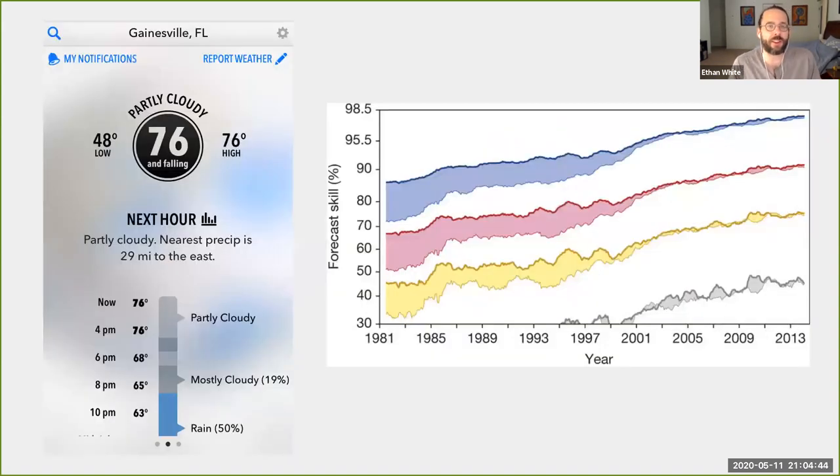The classic example of this is weather forecasting, which started off as performing worse than the long-term average, but has gradually improved to the point that many of us rely on these forecasts every day. And some of this improvement is driven by improvements in forecasting models, resulting in part from the fact that since early in weather forecasting's history, predictions from different models have been publicly available so that they could be compared to each other and everyone could learn to do better by looking at the approaches being used by the most effective forecasts.